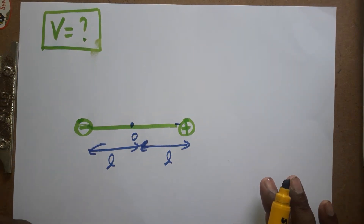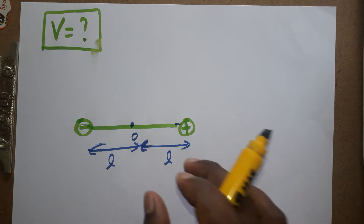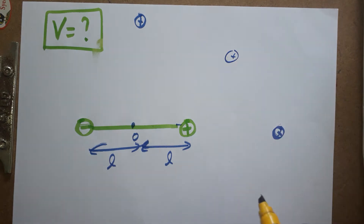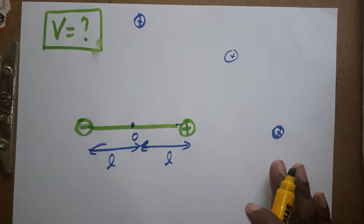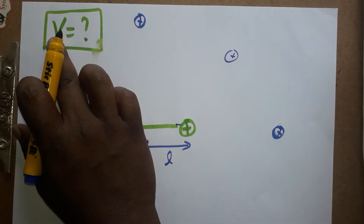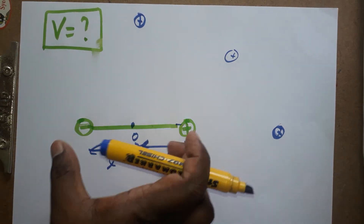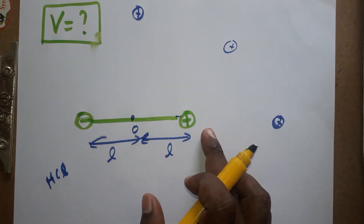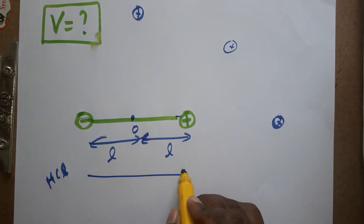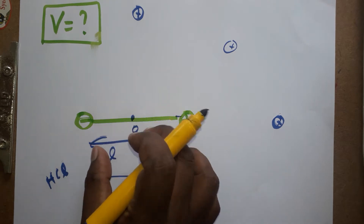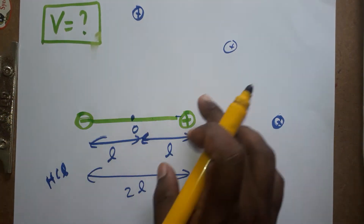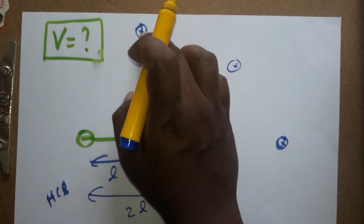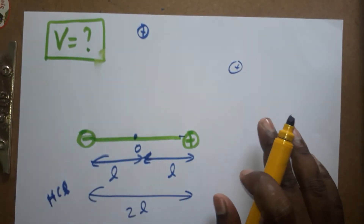Today we are going to learn what is the electric potential due to the electric dipole at an axial line, at an equatorial line, and at any point. These are the three concepts we are going to learn. Electric potential is also called voltage. HCl is one example of an electric dipole — two equal and opposite charges separated by a small distance. The axial line is the point straight along the dipole, and the equatorial line is the point perpendicular to it.